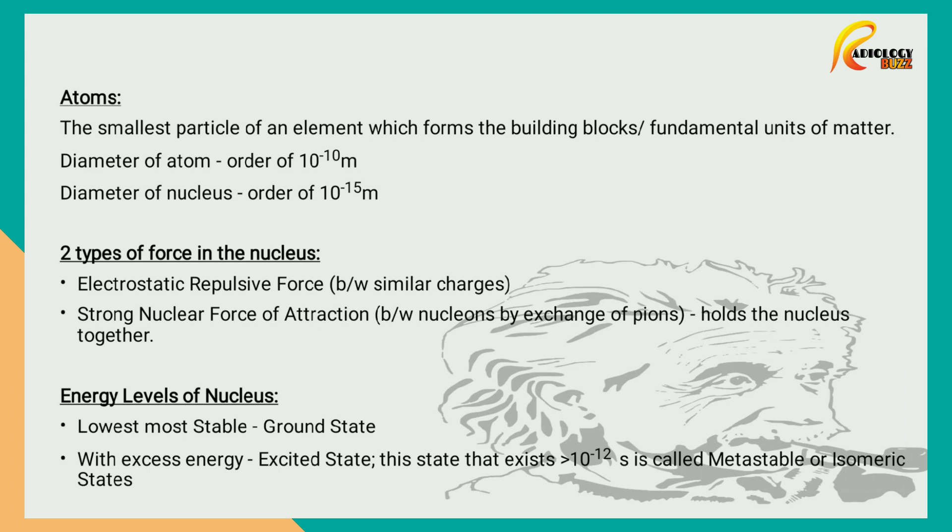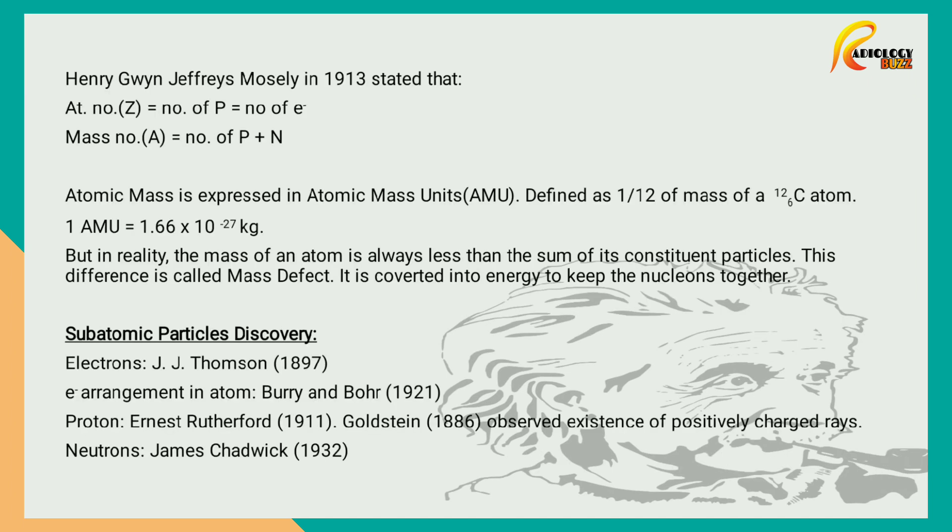Henry Moseley in 1913 stated that atomic number represented by Z is equal to the number of protons in the nucleus of an atom, which is also equal to the number of electrons in an atom. And the mass number of an atom, denoted by A, is the number of protons and neutrons in the nucleus of an atom.